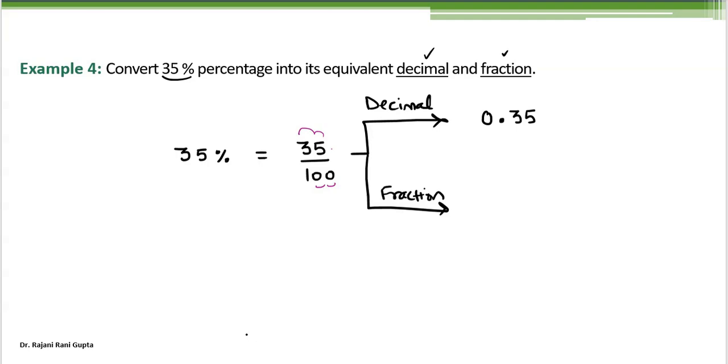Now, when we talk about converting into fraction, we look for the factors. What are the factors for 35? For 35, we know the factors are 7 times 5. And 100, we can write 5 times 20. So it is 7 times 5, 5 times 20. Cancelling 5 and 5, we get 7 over 20. So for 35 percentage, 0.35 is the decimal representation, and 7 over 20 is the representation in the fractional form. I hope it's clear.